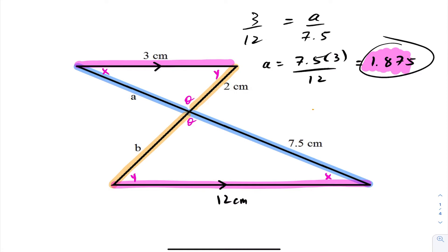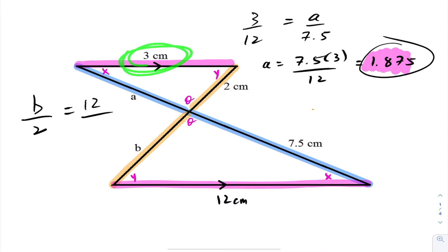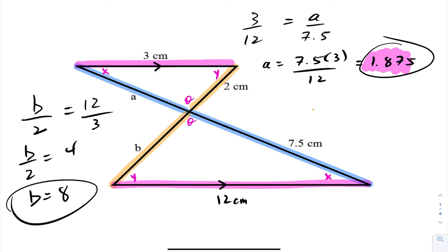To solve for B, this time we're interested in the larger triangle. So we go: B divided by its corresponding length, 2, has to equal the length of the larger triangle's corresponding side — 12 — divided by the smaller triangle's side, which is 3. This becomes B over 2 equals 4, so B equals 8. Therefore, we were able to solve for A and B using similar triangles.